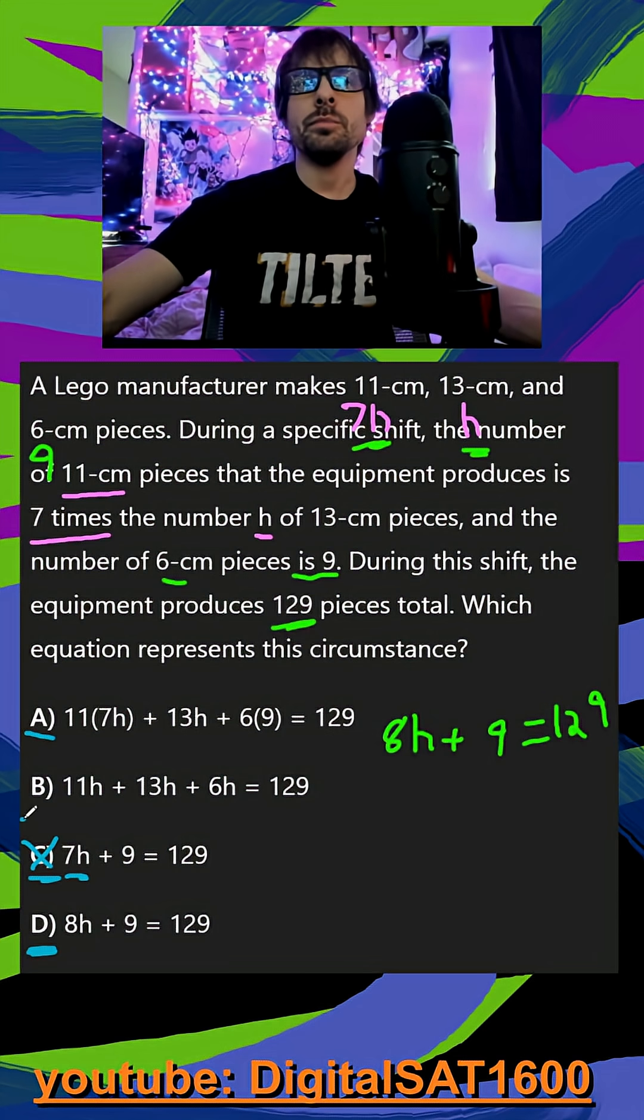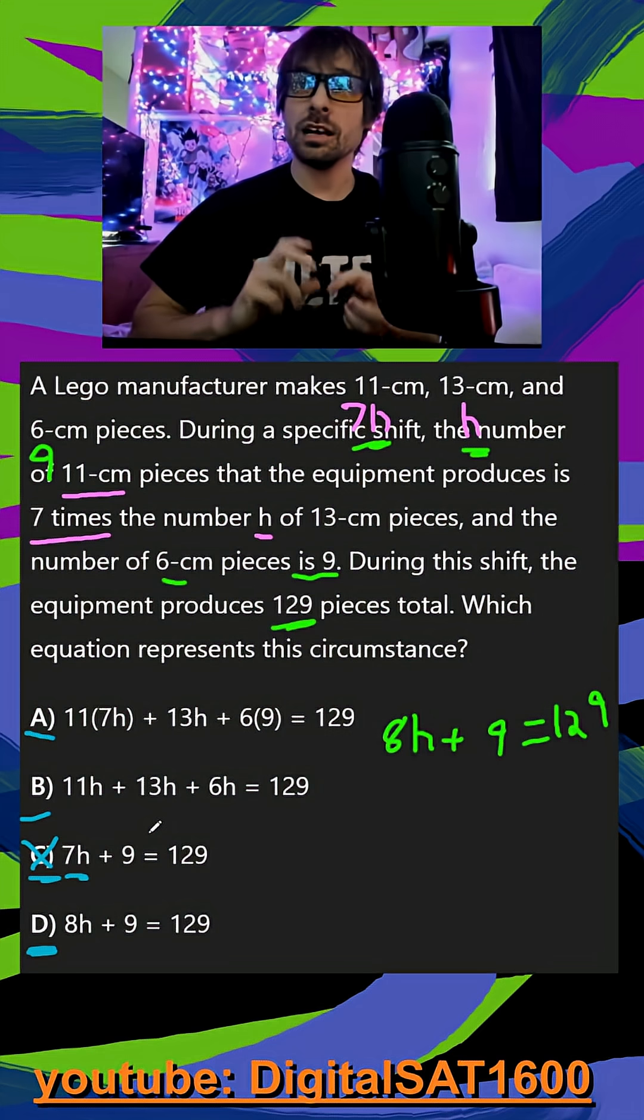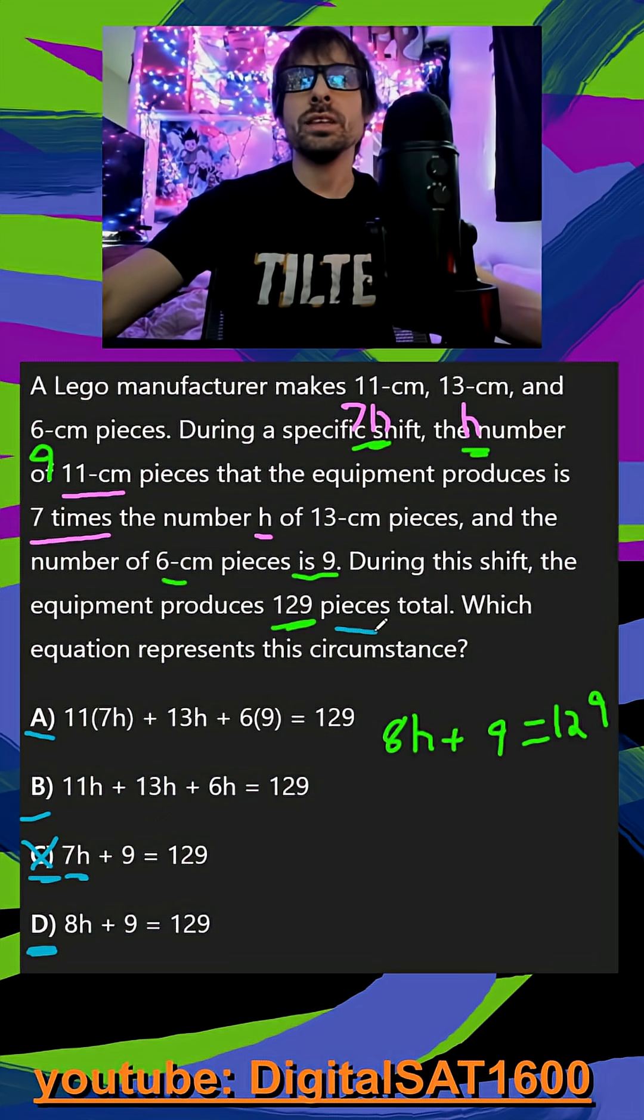The problem with A and B is they're tying centimeters into it. Remember that our units should be the number of pieces. They include the 11, the 13, and the 6, which are in centimeters. So that would make our total units centimeters, not number of pieces.